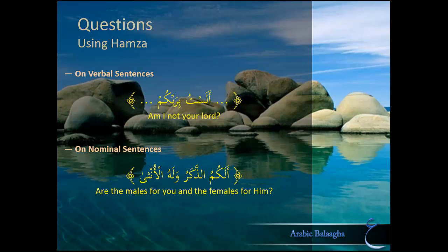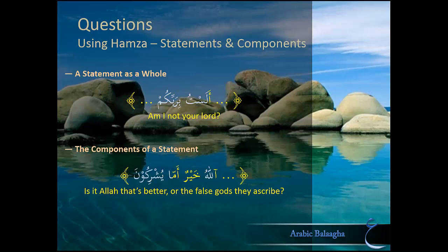The sentence can be either verbal, like أَلَسْتُ بِرَبِّكُمْ, or nominal, like أَلَكُمُ الذَّكَرُ وَلَهُ الْأُنْثَى (Do you get sons while he gets daughters?). The Hamza Maftooha can be used to ask about a sentence as a whole, as in أَلَسْتُ بِرَبِّكُمْ — the question here is on the statement as a whole: am I your lord or am I not your lord? Is this statement true or is it false?